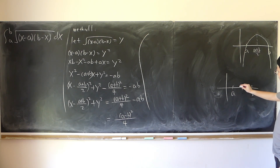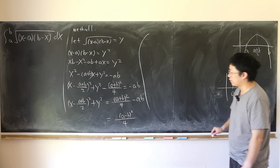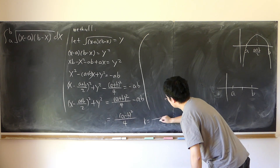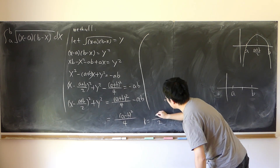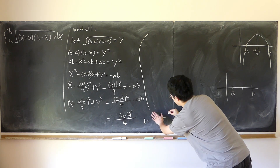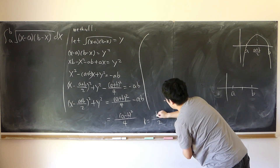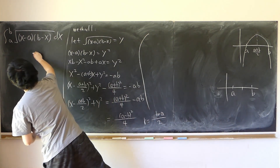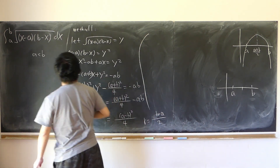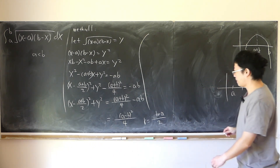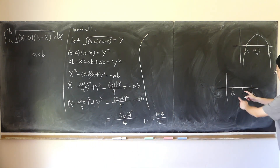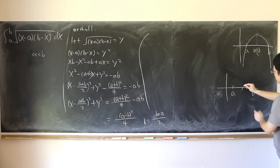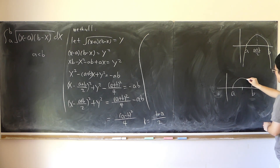Here's the circle. The radius is half of (b minus a). So here is the function as a circle.